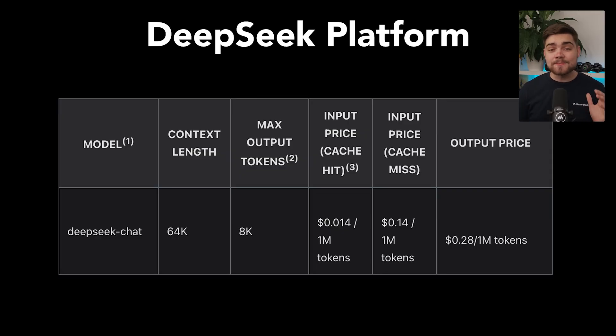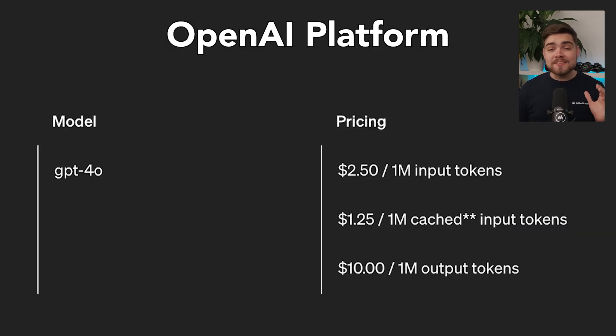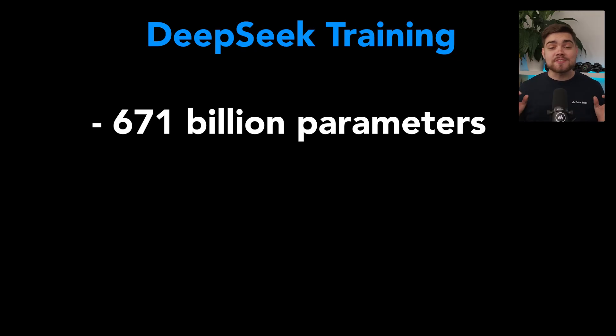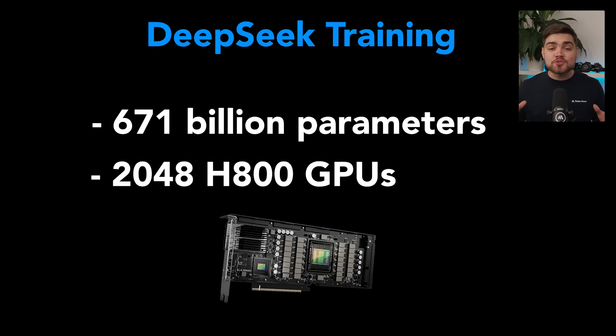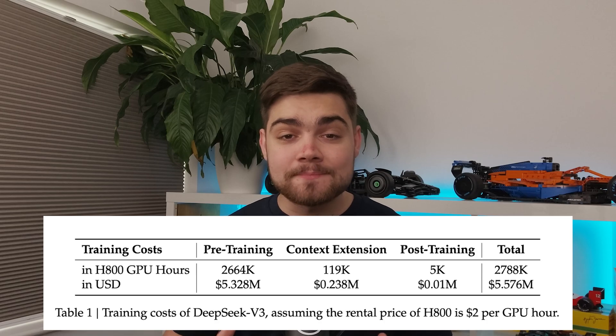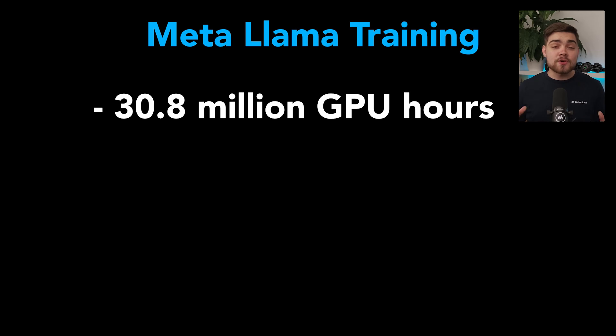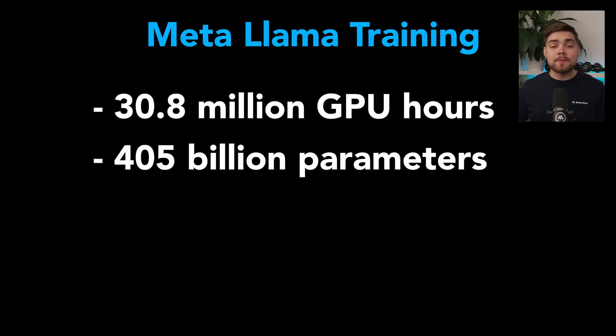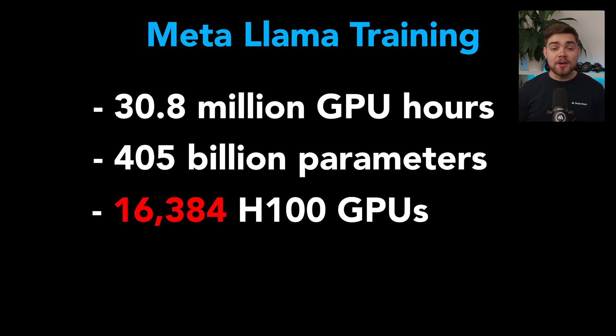Pricing is insane as well. On Deep Seek's platform, it costs 1.4 cents for a million input tokens and 28 cents for a million outputs. For reference, GPT-4o is $2.50 in and $10 out. Deep Seek actually trained V3 with 671 billion parameters using a cluster of just 2,000 NVIDIA H800 GPUs in only two months. Overall, that's only 2.8 million GPU hours and $5.6 million. For comparison, it took Meta 11 times more compute — 30.8 million GPU hours — to train Llama 3, a 405 billion parameter model using 16,000 H100 GPUs in the same amount of time. That's a whole lot more cash.